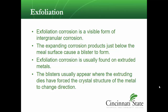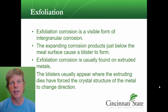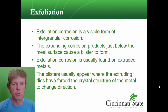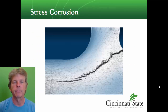The expanding corrosion products just below the metal surface cause a blister. It's usually found on extrusions — things like aluminum angle. The blisters appear where the extruding dies have forced the crystal structure of the metal to change direction.